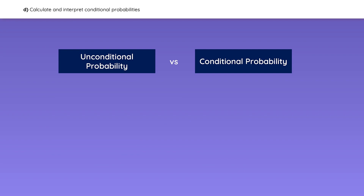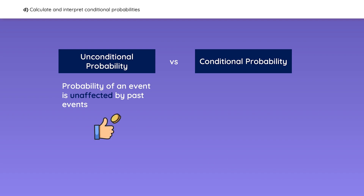An unconditional probability is the probability of an event happening, and it is not affected by any past events. For example, if you flip a coin, it doesn't matter how many heads or tails you've gotten in the past — the probability of heads or tails will always be the same.